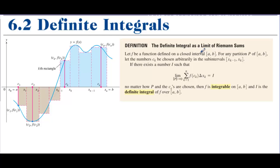Let f be a function defined on a closed interval a to b, for any partition p of [a, b]. Let the numbers c sub k be chosen arbitrarily in the sub-interval. The change in x is your width, and f of c sub k is the height of the rectangles — really it's the area. The height times the base. As long as the limit as the biggest partition tends to zero, there should be an integral value. No matter how p and c's are chosen, then f is integrable on a to b, and i is the definite integral of f over ab.